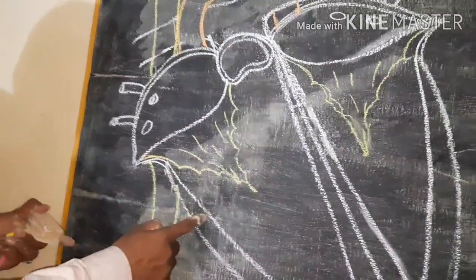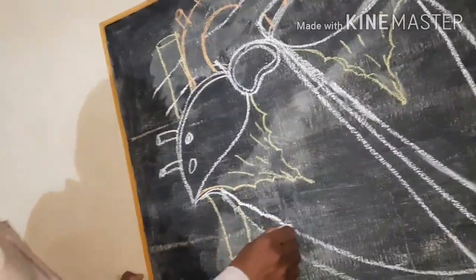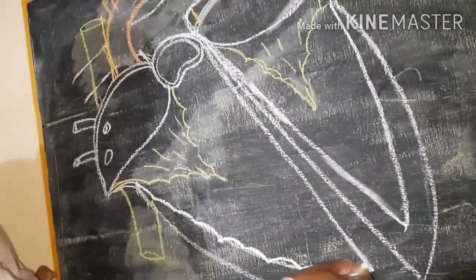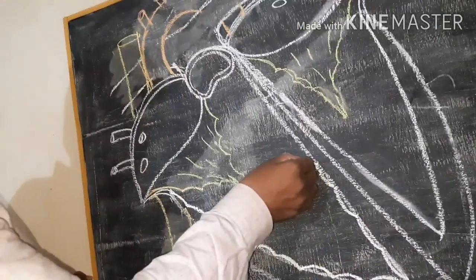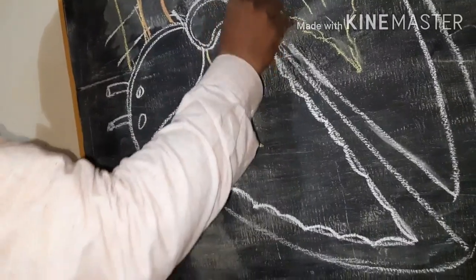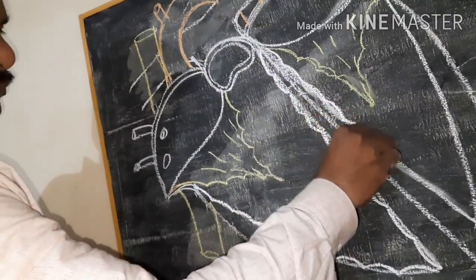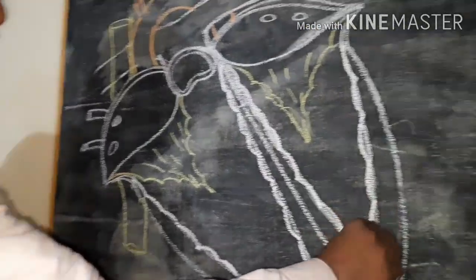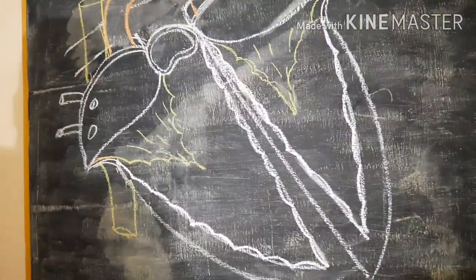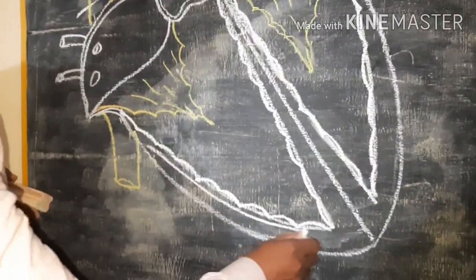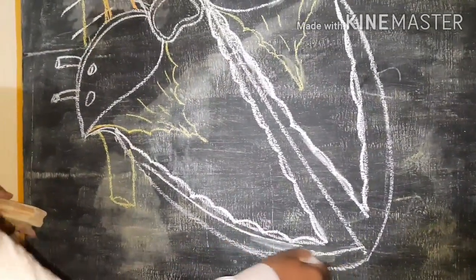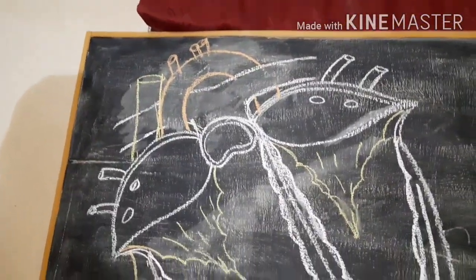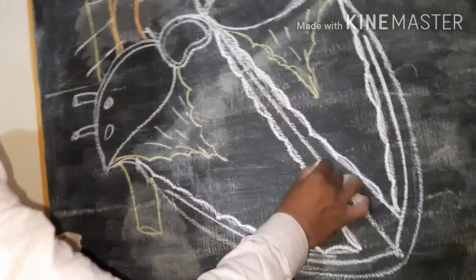See, inside this curve you can draw small small curves like this — small small curves here also. You can draw a middle line for this, and for this also a middle line. You have to draw lines like this.